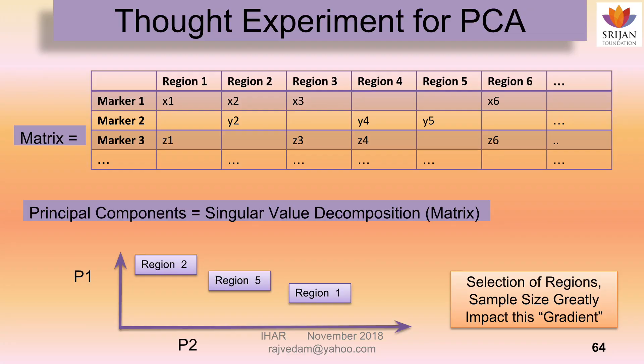If you do something called singular value decomposition — how many engineers are here? Some are engineers, so you might have heard singular value decomposition in your past. Once you do this mathematical algorithm, it gives you a bunch of numbers called principal components. David Reich is taking the largest principal components P1 and P2, placing these regions on a graph, and based on the resulting gradient he says the northern Indian population is closer to central Asia and the southern Indian population is an isolate — therefore he derived the ANI and ASI.